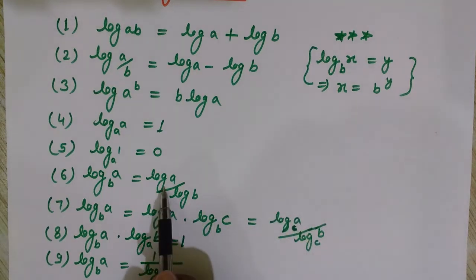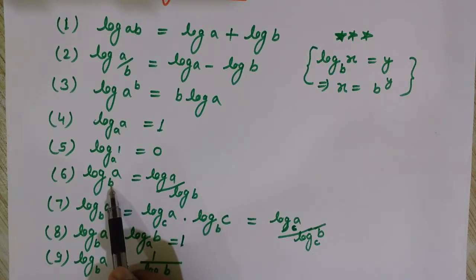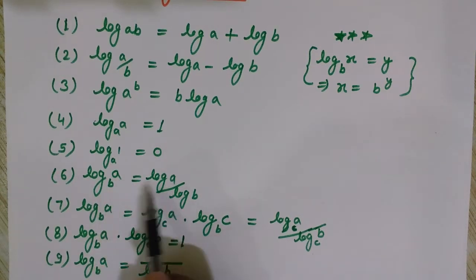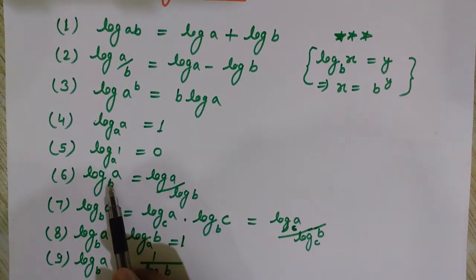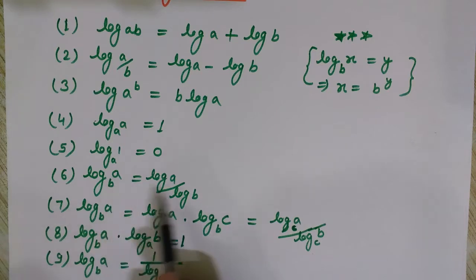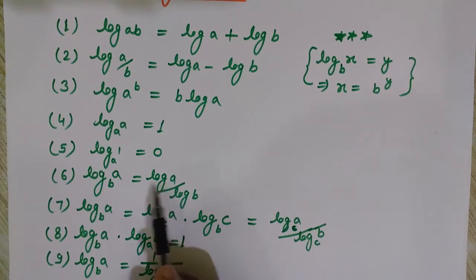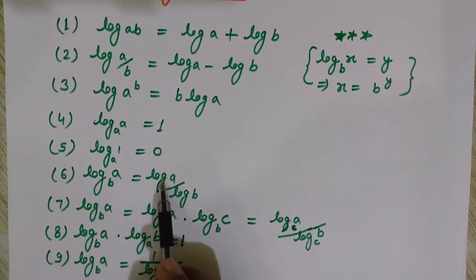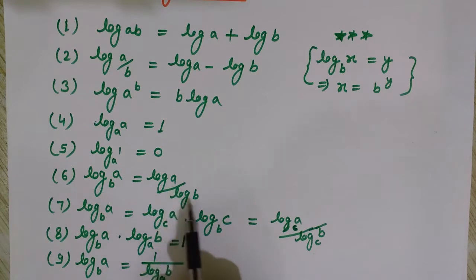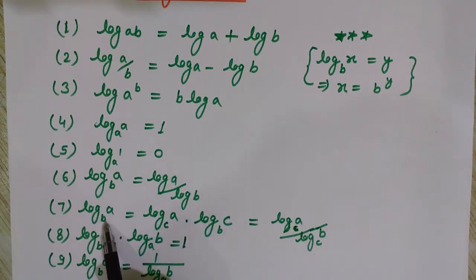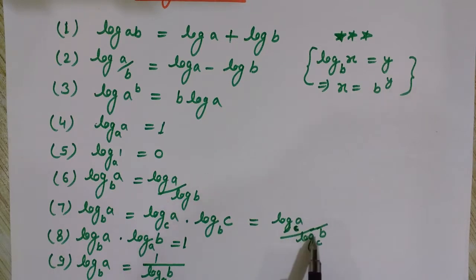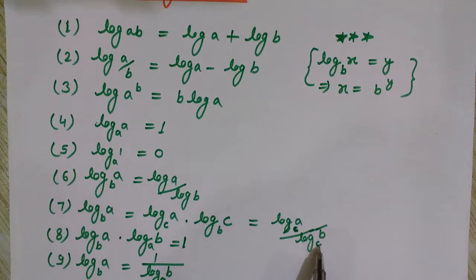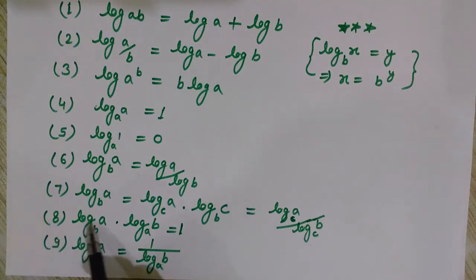Here you can also see that log of a to the base b, if I want to change it to base 10 — since if nothing is written in the base it is assumed to be 10 — it is similar to: log of a to the base b equals log of a to the base 10 divided by log of b to the base 10. So log of a to the base b equals log of a to the base c divided by log of b to the base c, where here the base was 10.